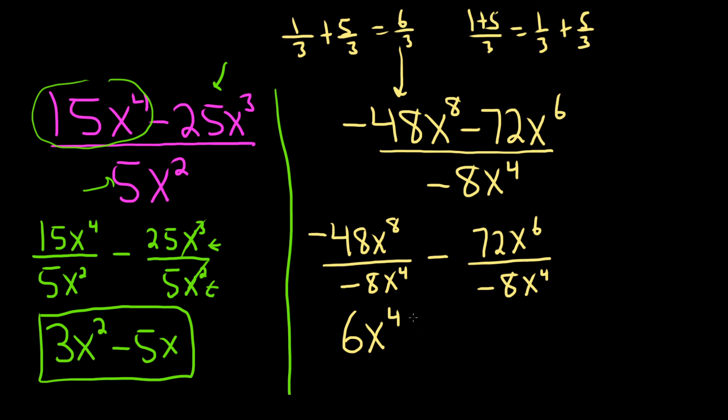This is going to be plus because they're both negative. 8 goes into 72 nine times. And we have six copies of x up top and four on the bottom. So we'll lose four copies. So we're left with x squared. And that would be the final answer. I hope this video has been helpful.